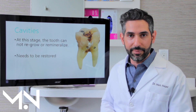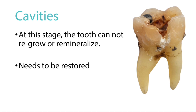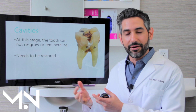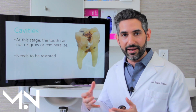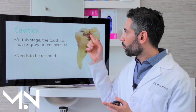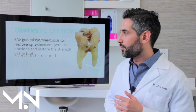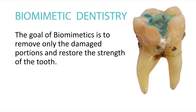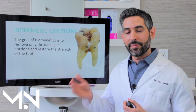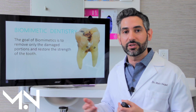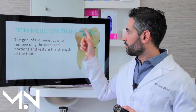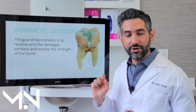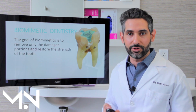At this stage you can't regrow or remineralize. In the early stages, saliva can help, but once there's actually a hole or a missing area of the tooth, nothing has the ability to regrow that — saliva can help strengthen the surface but it can't regrow portions of a tooth. Now it needs to be restored. The goal of biomimetics is to restore this area without taking away more tooth — to mimic the tooth, restore it to strength, and preserve as much intact tooth structure as possible.